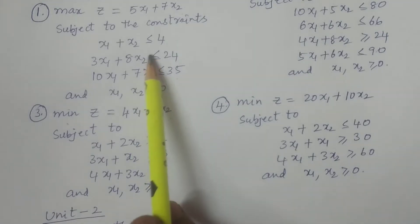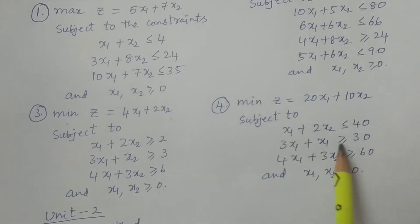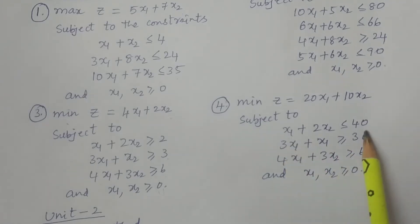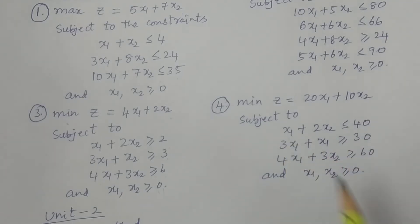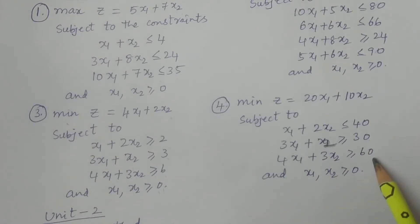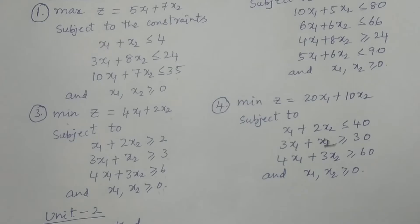In the first maximization problem, all constraints are less than or equal to, so it is a bounded region. The second minimization problem: minimize z = 20x1 + 10x2, subject to x1 + 2x2 ≤ 40, 3x1 + x2 ≥ 30, 4x1 + 3x2 ≥ 60, and x1, x2 ≥ 0. These four problems are very important for the graphical method — do these and you can attempt any question in the examination.